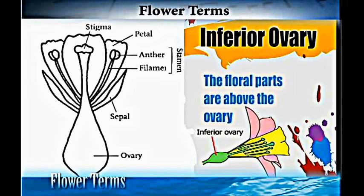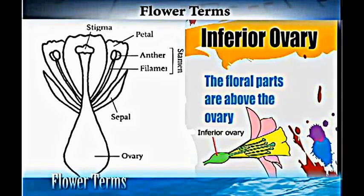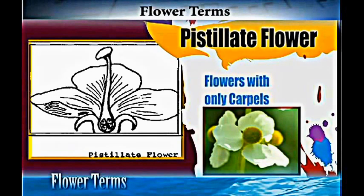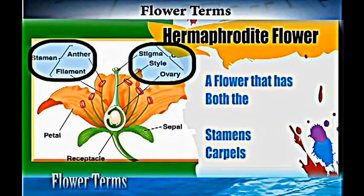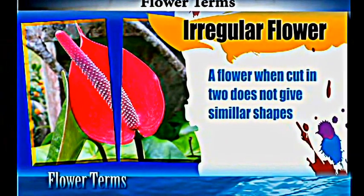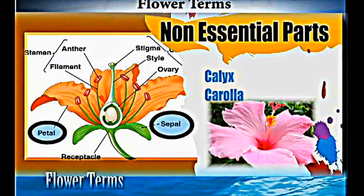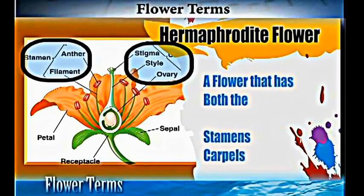So those are some of the terms we use when describing flowers. We have covered the superior ovary, inferior ovary, pistillate flowers, monoecious, dioecious, staminate flowers, unisex, hermaphrodite, complete flowers, incomplete flowers, perfect flowers, essential and non-essential organs, regular flowers, and irregular flowers.